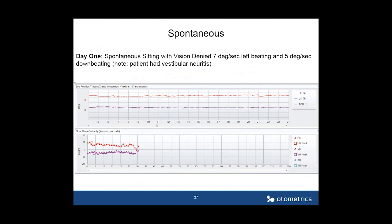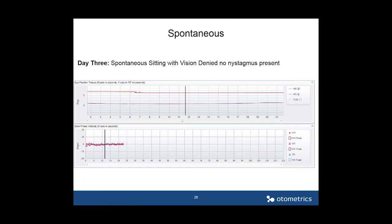Here is an example of a patient with vestibular neuritis from a colleague in Spain. On day one, the patient was sitting with vision denied and had seven degrees of left-beating nystagmus in the horizontal trace and five degrees of down-beating nystagmus in the vertical trace. You can see these traces along with the slow phase velocity graph — red for horizontal, purple for vertical. By day three, in spontaneous sitting with vision denied, the patient had no nystagmus. This is an example of vestibular neuritis where spontaneous nystagmus recovered, a static symptom as discussed.